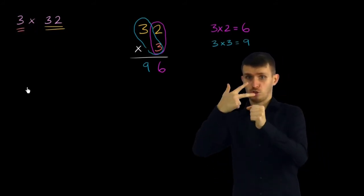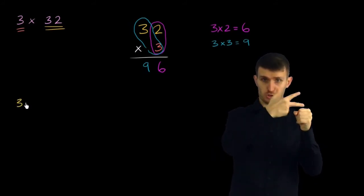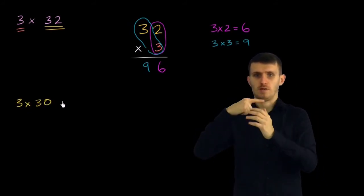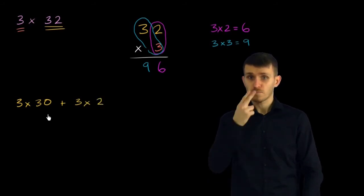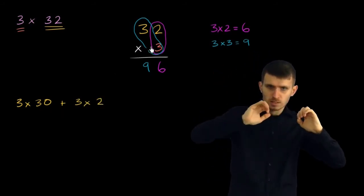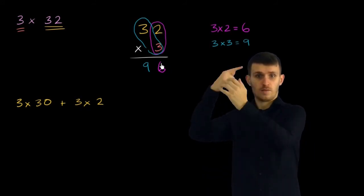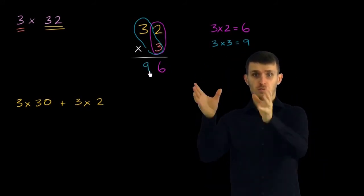Remember, 3 times 32 is the same thing as 3 times 30 plus 3 times 2. And if you look at it that way, that's essentially what this process did. We did 3 times 2 is 6. 3 times 30 is 90.